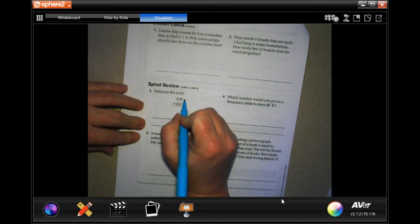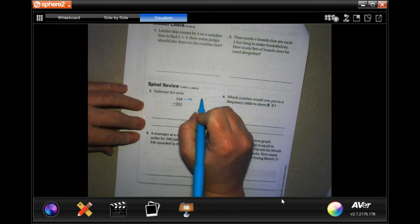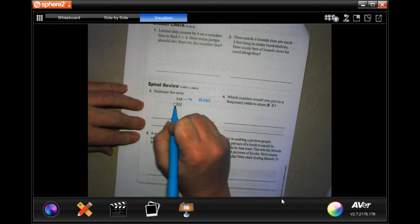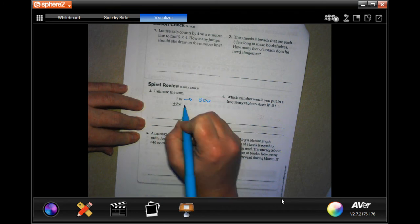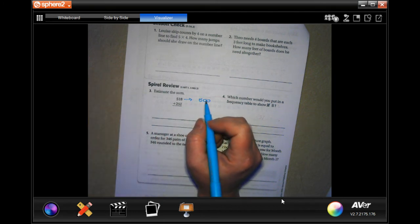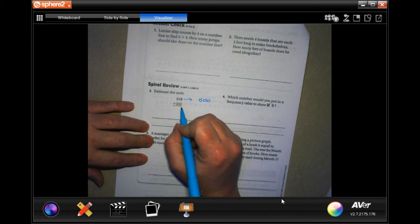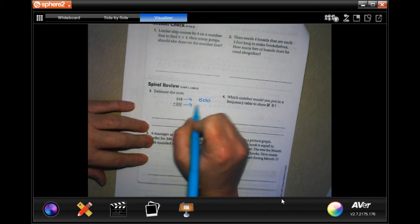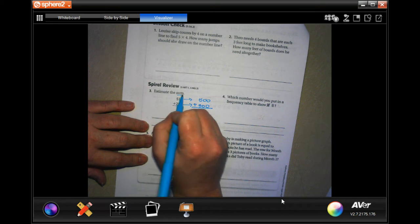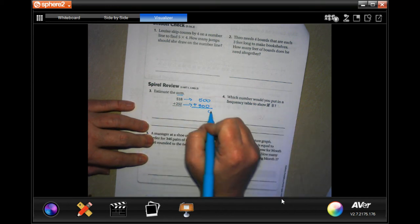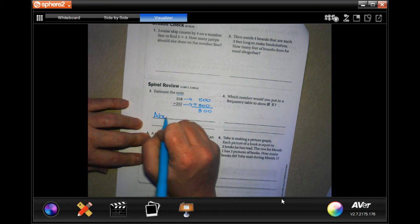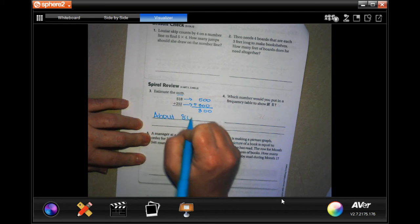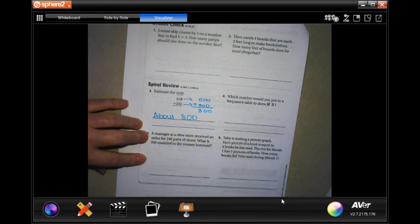Well, estimate, so 518 would round to about 500. 251, we could do 250, or we could do 300 because it's over 250, so let's do 300. And we're going to add those together because it says sum and it's adding. So 0 is 0, 5 plus 3 is 8. So about 800.